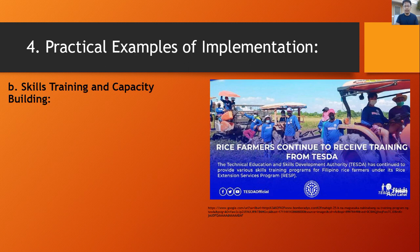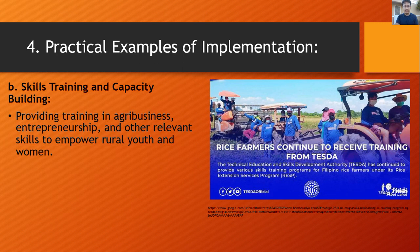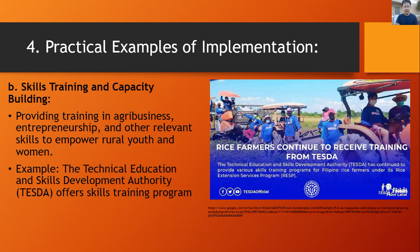Then there is skills training and capacity building — providing training in agribusiness, entrepreneurship, and other relevant skills to empower rural youth and women. An example is the Technical Education and Skills Development Authority, also known as TESDA, which offers skills training programs especially for farmers.